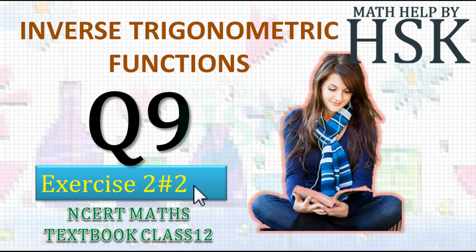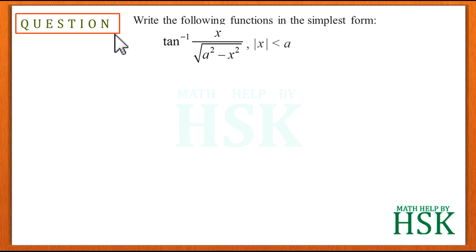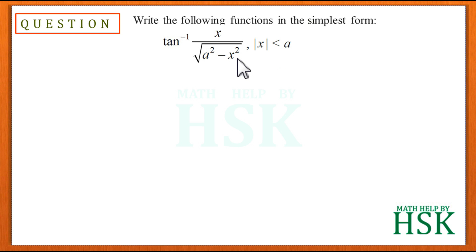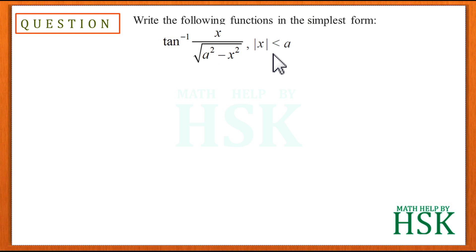Taking question number 9 of exercise 2.2 of inverse trigonometric functions. We have to write this function in the simplest form. The function is tan inverse of x upon square root of a square minus x square, where modulus of x is less than a. If modulus of x were greater than a, the square root would have a negative term, making the expression invalid.